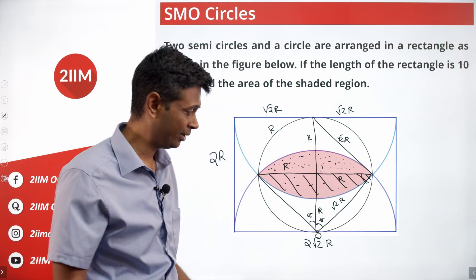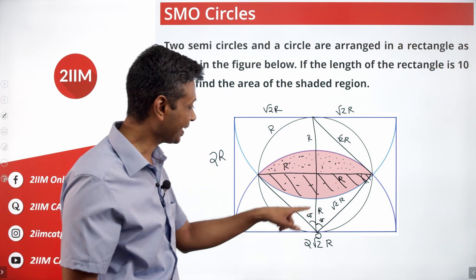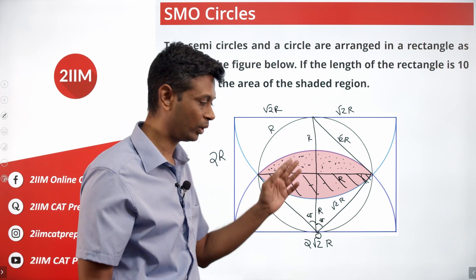The sector is a quadrant. Why? The central angle is 90, one fourth of a circle. The triangle is a right angle triangle, so it is half into base into height.